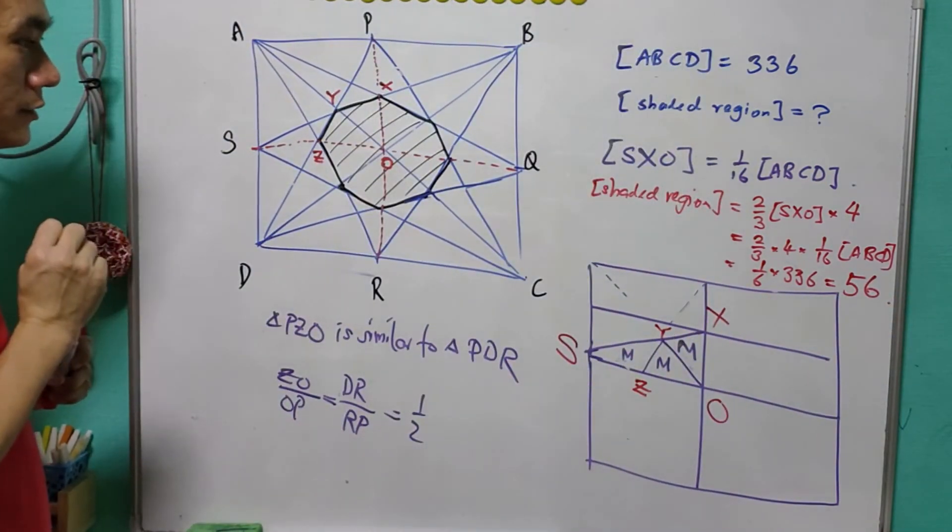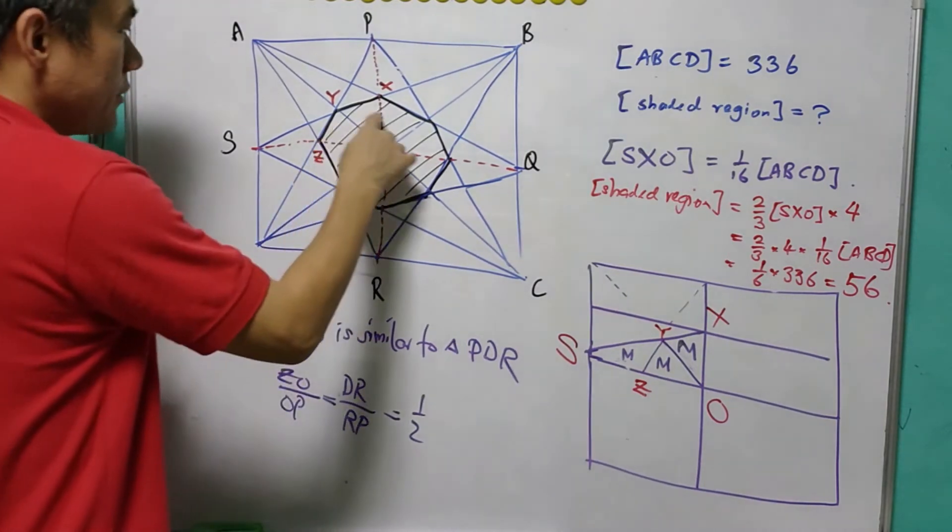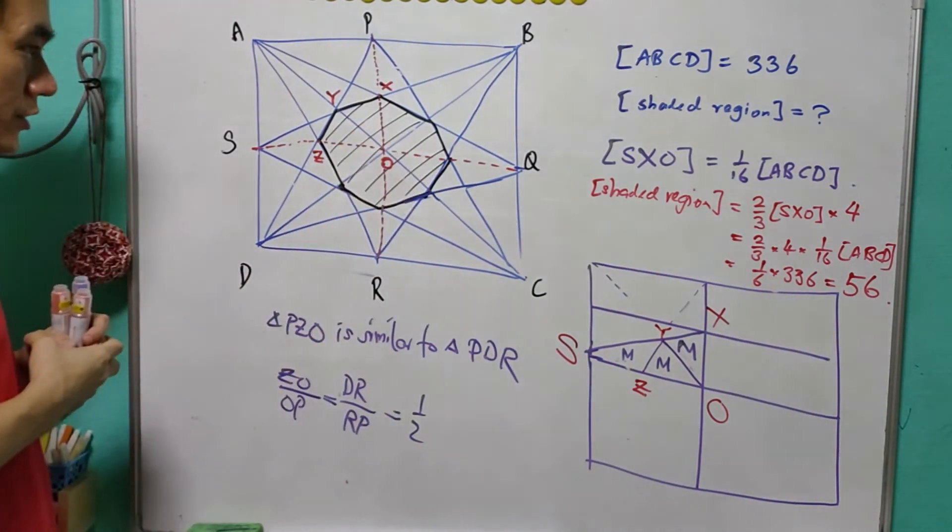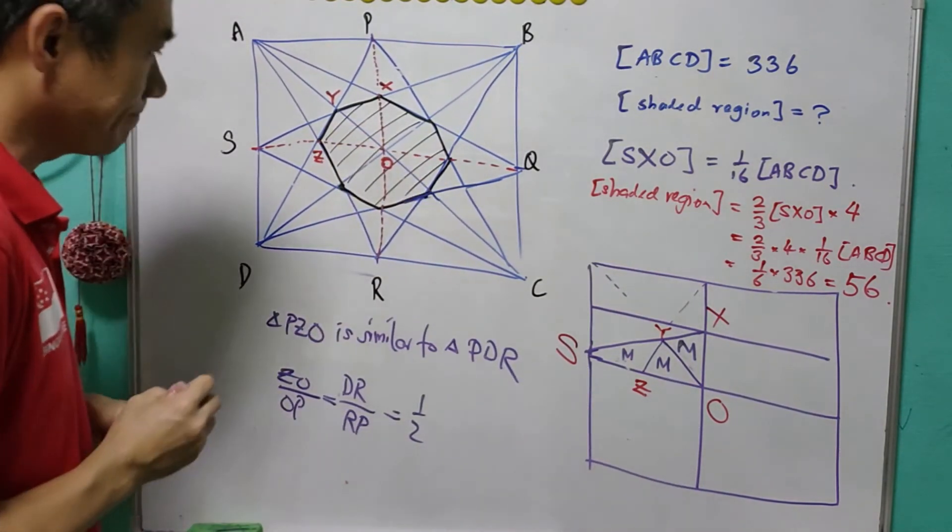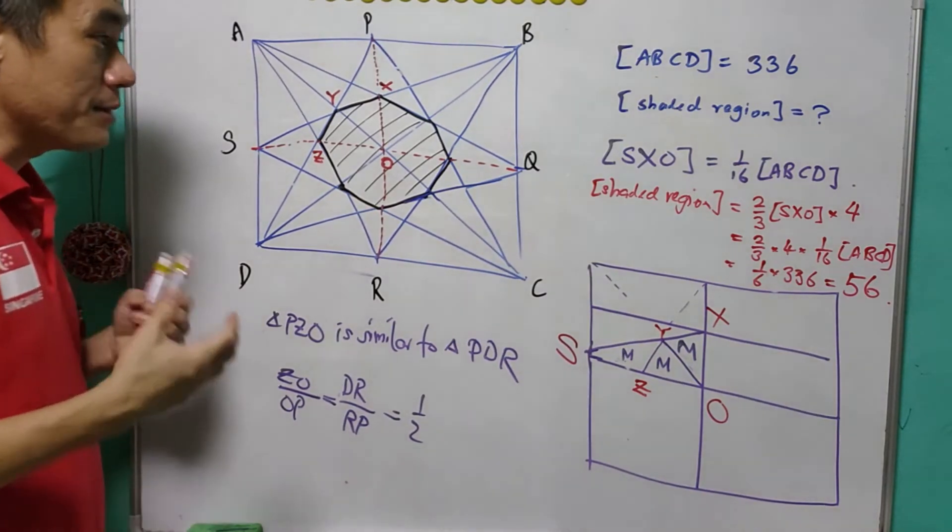So, with these two simple ideas, we are able to calculate that the area of the shaded region is equal to 56. And for now, let us look at other deeper solutions.